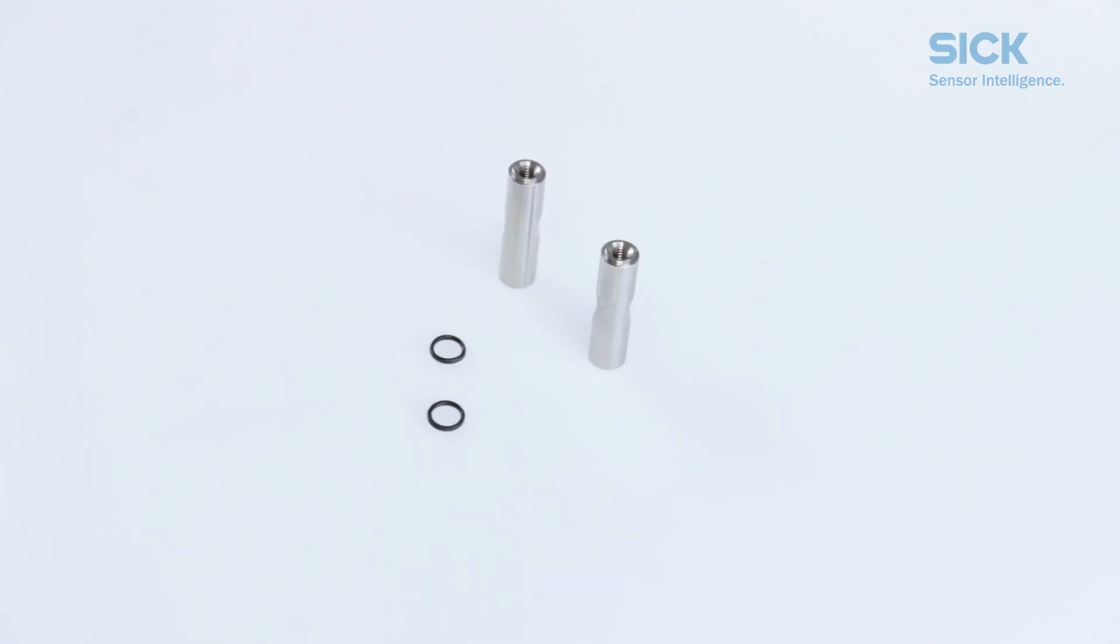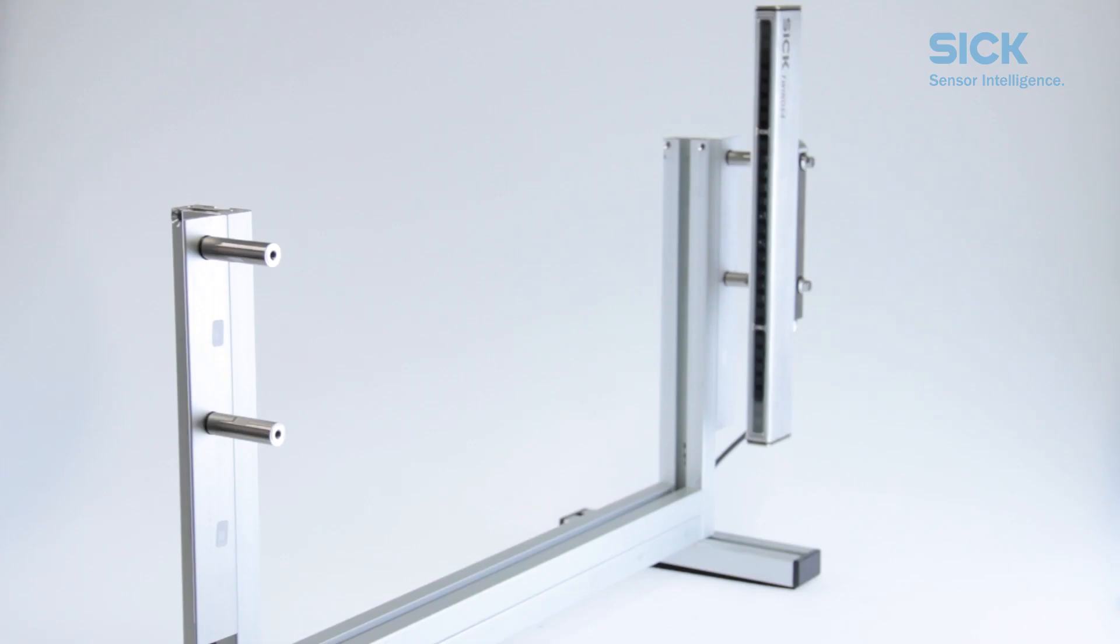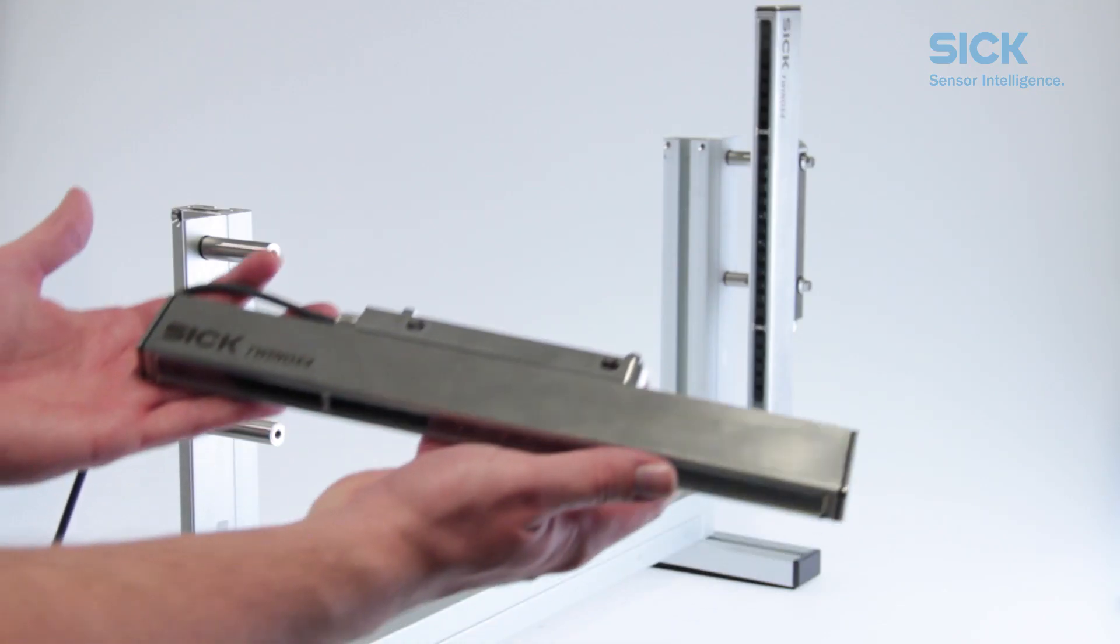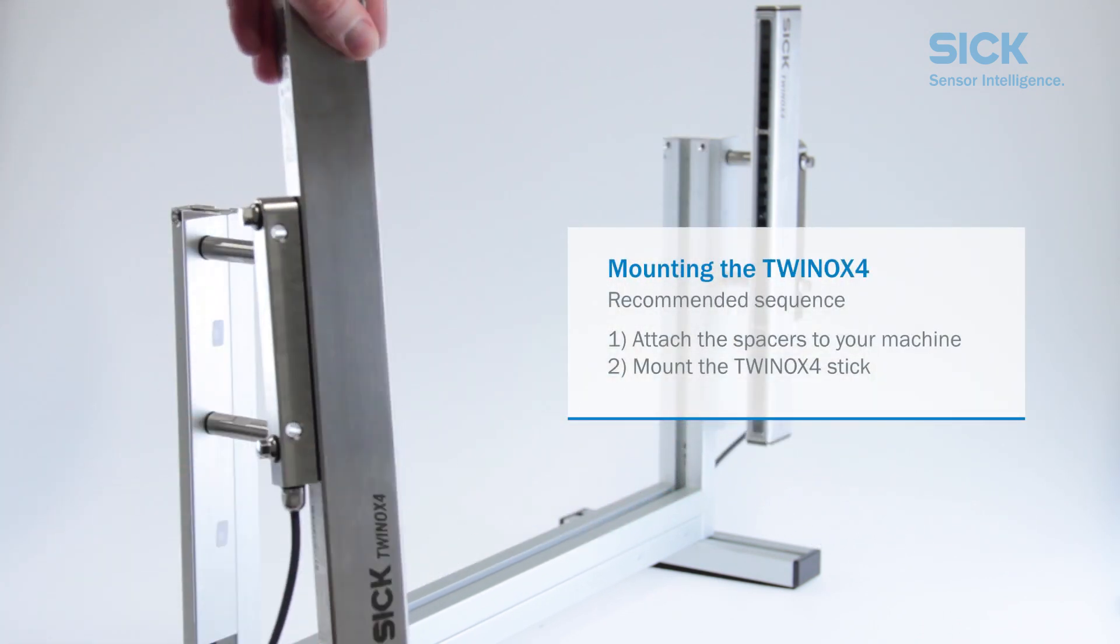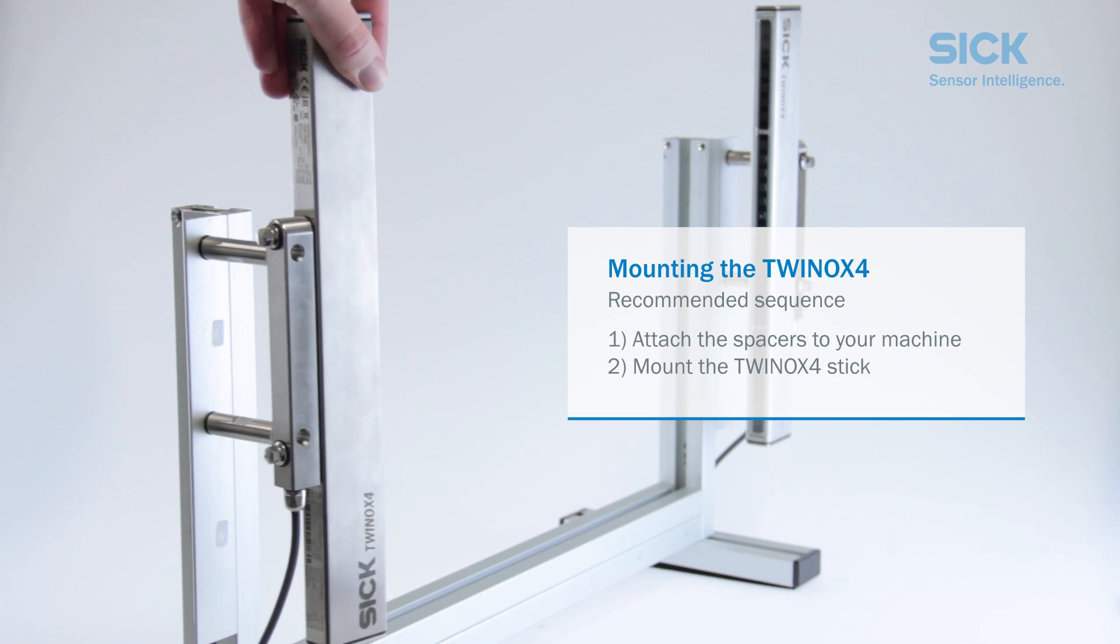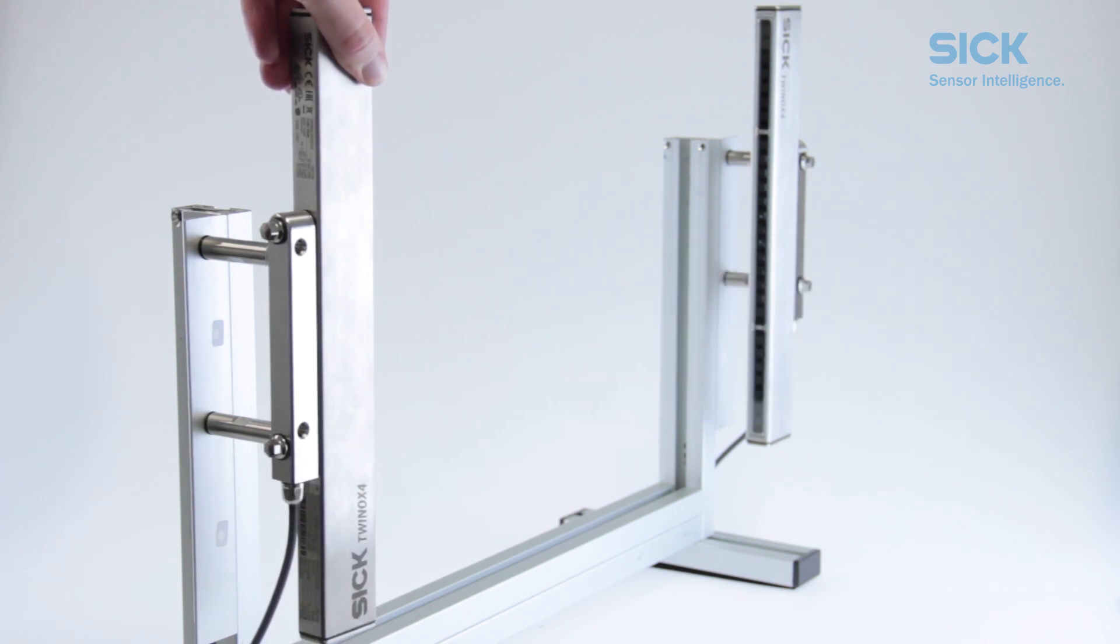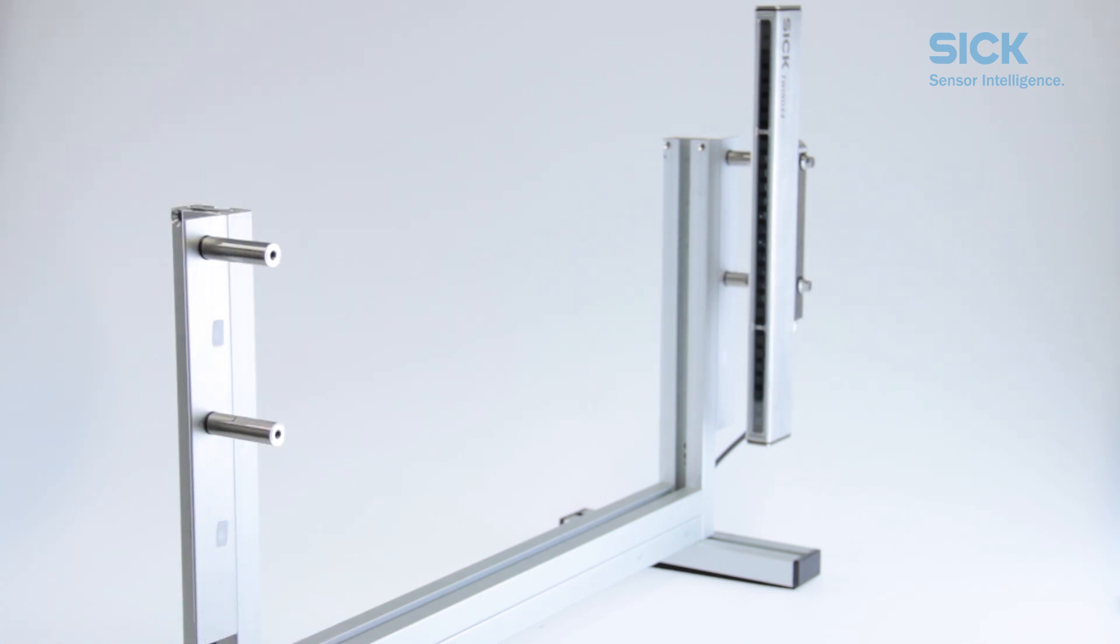Now, as a first step, we are going to mount the spacers onto the profile. We recommend that you do it in this order rather than attaching the spacers to the bracket first and then mount the entire construction. It is simply easier this way and it helps you adjust the light curtain later on.